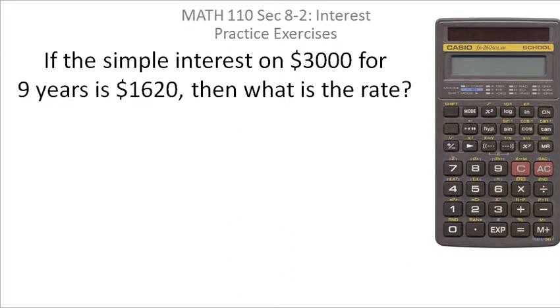If the simple interest on $3,000 for nine years is $1,620, then what is the rate? Again, this is like the last problem. This is a simple interest problem, so we'll use capital I equals capital P times rt.